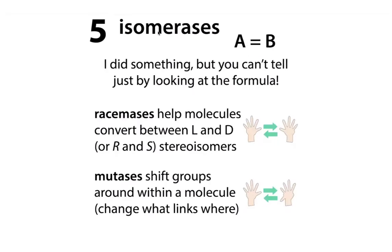Isomerases are one of the easiest to recognize — they swap things around within a molecule without changing the actual atomic composition, just changing the arrangement. This could be a change in 3D arrangement, such as stereo isomers (like left and right hands), which a racemase can interconvert. An example we've seen is cis-proline isomerase, which converts between cis and trans proline backbone conformations — a configurational change that requires making and breaking bonds.